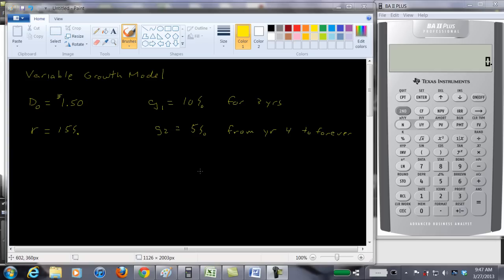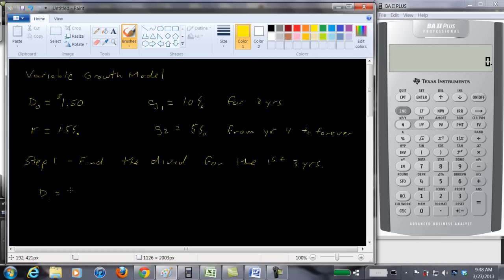So how are we going to value this stock? Well we're going to have to take a couple of steps. Step one is let's find the dividend for the first three years. That's when the dividends grow at this constant rate of ten percent and so the dividend in year one is going to be equal to D0 times one plus the growth rate G1.